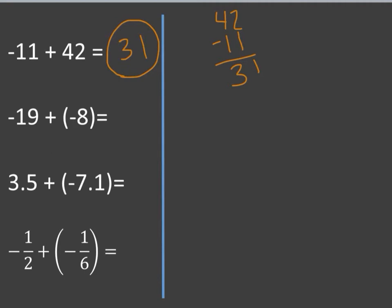Here we have negative 19 plus negative 8. My signs are the same, so I'm going to add them. Negative 19 plus 8, so I'm going to go 19 plus 8. That's 17, that would be 27. In this case, since those signs are the same, we keep the sign. So it's going to be negative 27.